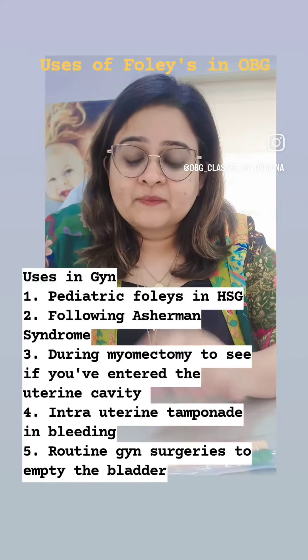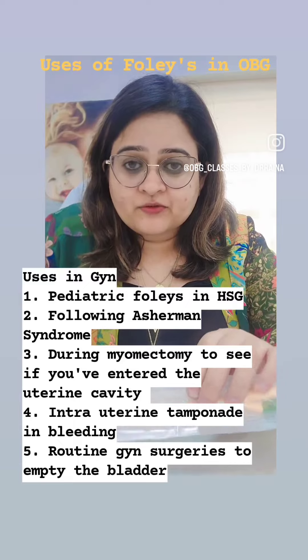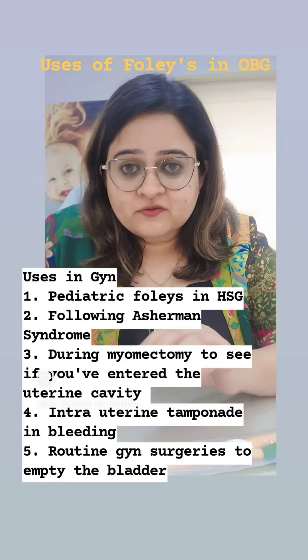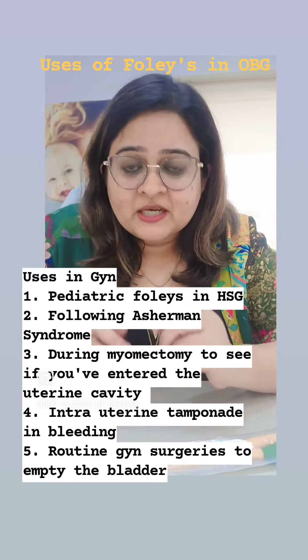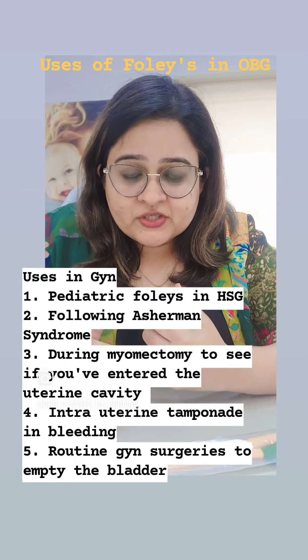In gynaecology, we can use a Foley's catheter in place of a Leach-Wilkinson cannula. If you don't have a Leach-Wilkinson cannula, you can use a paediatric Foley's No. 8 to inject the dye when doing an HSG.